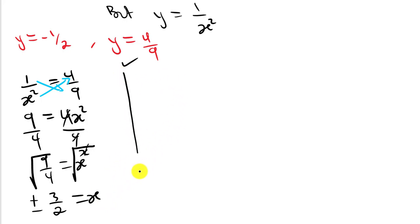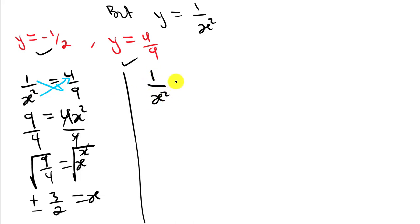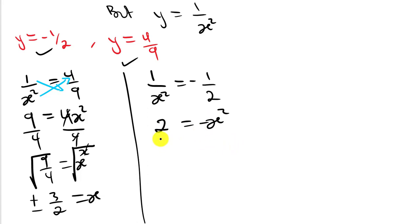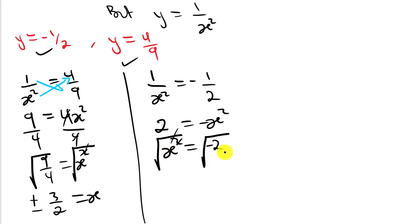Considering the other value, y = −1/2: replacing y with 1 over x squared gives 1 over x squared = −1/2. Cross-multiplying gives 2 = −x squared, or x squared = −2. Taking the square root of a negative number does not give a real root — it gives complex roots: x = ±√2 · i.